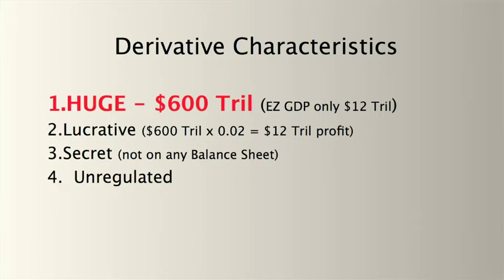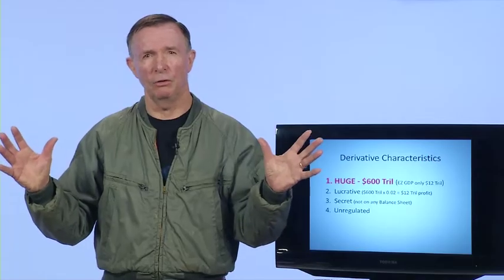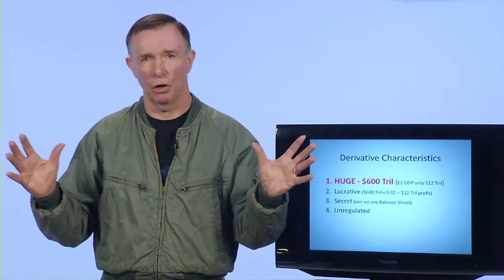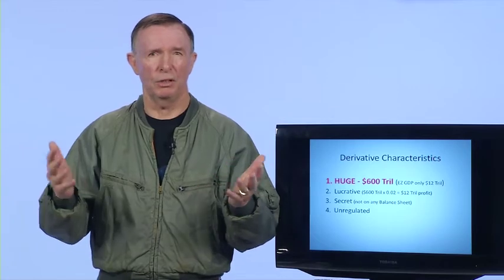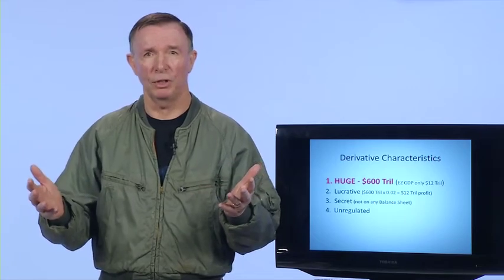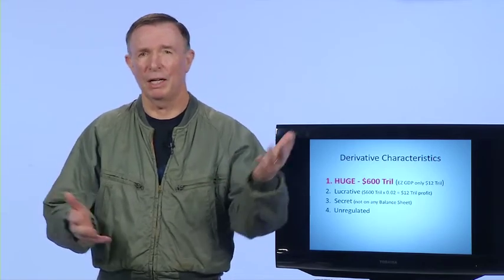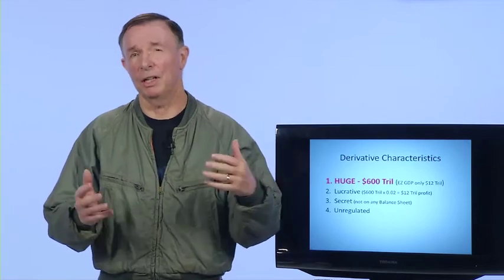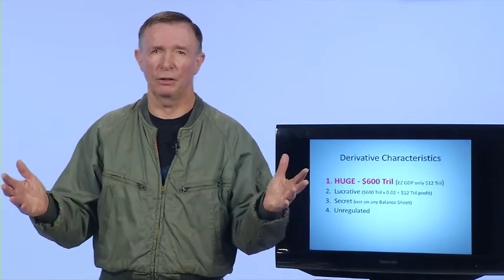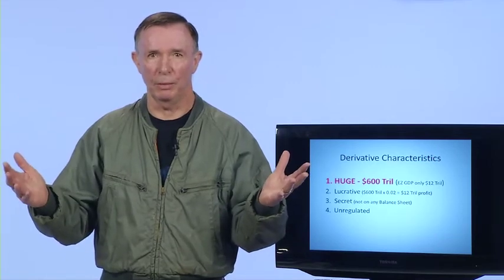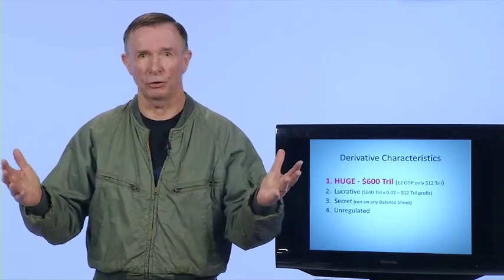First of all, derivatives are huge. They're $600 trillion. I mean, it makes no sense. They do not correlate with the real world at all. The Eurozone GDP, for example, is $12 trillion. The U.S. GDP is $15 trillion. That's $27 trillion combined. There's a $600 trillion market. The people that make these derivatives say it's risk management. There isn't $600 trillion of risk in the world to manage. This is a complete farce.